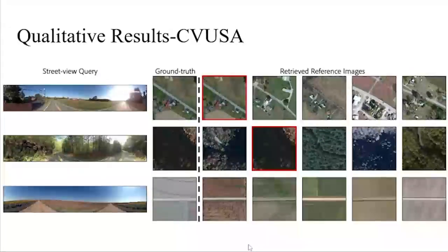Results on CVUSA, which is more of a rural area with trees and streets rather than tall buildings, show that even with limited distinctive information, we are still able to retrieve the correct match.